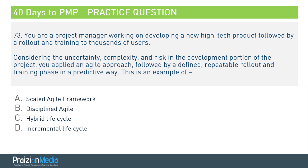You're a project manager working on developing a new high-tech product followed by a rollout and training to thousands of users. Considering the uncertainty, complexity and risk in the development portion of the project, you applied an Agile approach followed by a defined, repeatable rollout and training phase in a predictive way. This is an example of what?